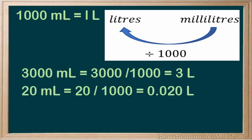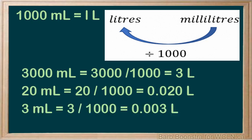Twenty milliliters would be twenty divided by a thousand, which is point zero two liters. To divide by a thousand, you will move the decimal three places to the left, adding zeros if necessary. Three milliliters would be three divided by a thousand, or point zero zero three liters.